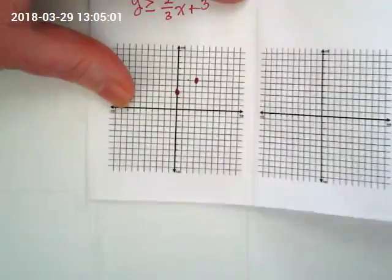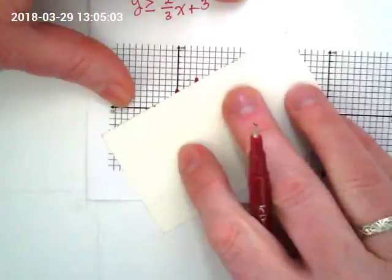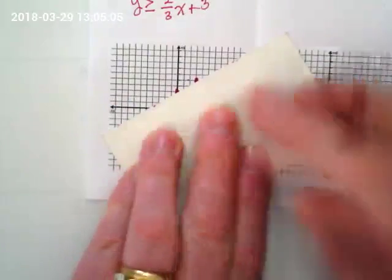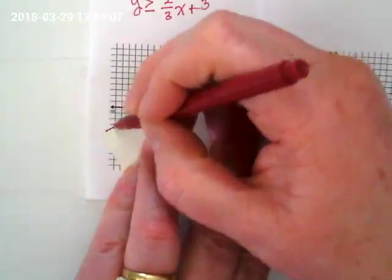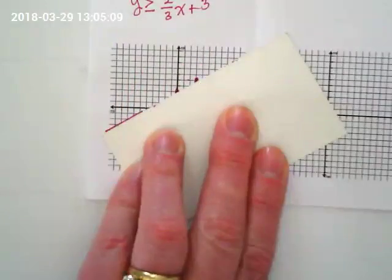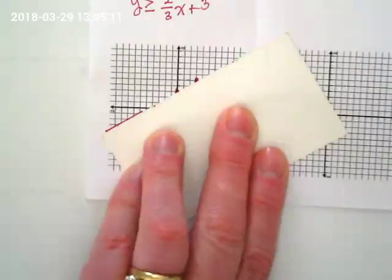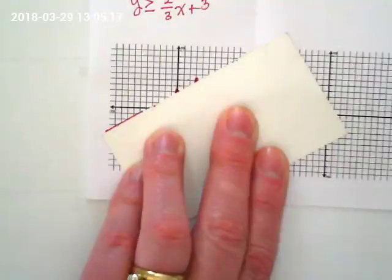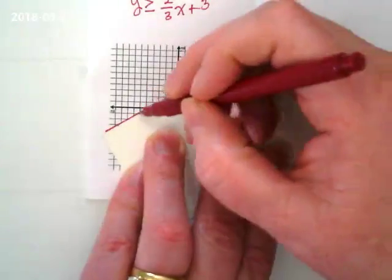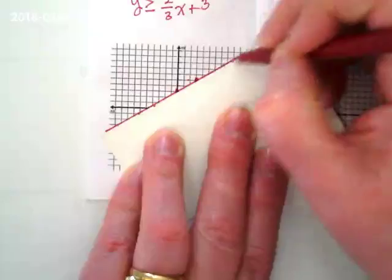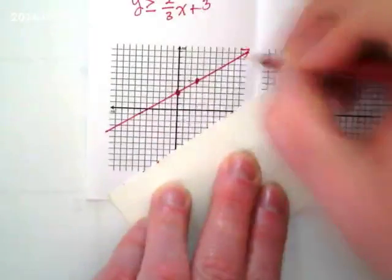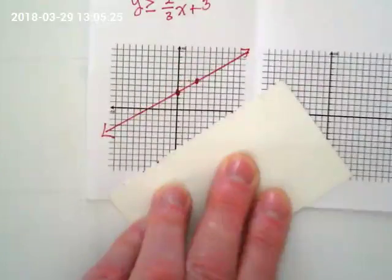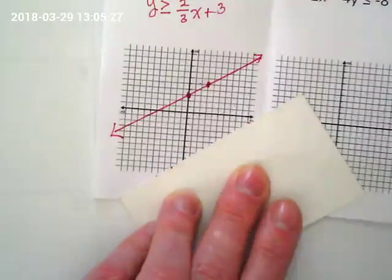You really only need two lines on your graph to make the line, so use your straight edge. Oops, I started graphing. I forgot to check: is it greater than or equal to, or just greater than? So what kind of line does it get? Solid line. It is positive because it's positive slope.